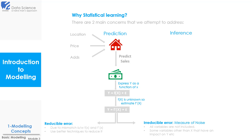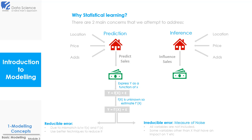So this was in brief what a prediction problem is. The second type of problem that we try to address by statistical learning is inference. Sometimes you may not be interested in predicting the sales of a house — rather you wish to know which variable has a greater influence on the sales. So you may like to know if your advertisement strategy is good enough, or if your prices are driving your sales, etc. Problems of these types are called inference problems, and we can use statistical learning to answer them.